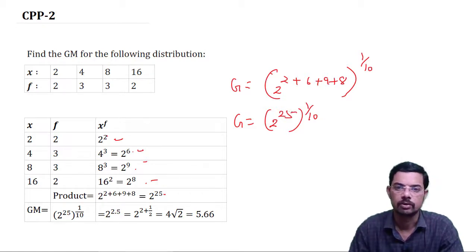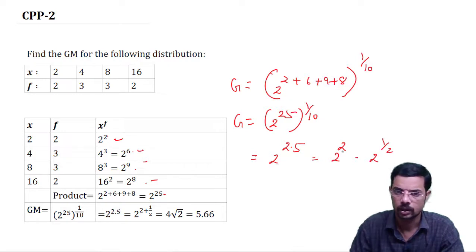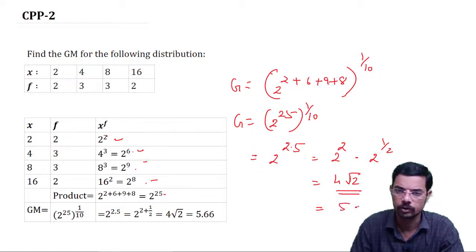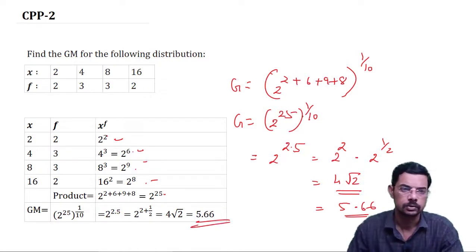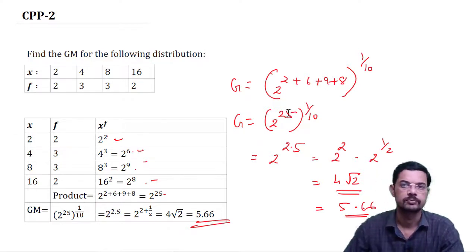So GM equals 2 raised to 25 by 10, which is 2 raised to 2.5. This can be written as 2 squared into 2 raised to 1 by 2, which equals 4 root 2. Using a calculator, this equals approximately 5.66. That is all for this topic; we shall move on to harmonic mean in the next video. Thank you.